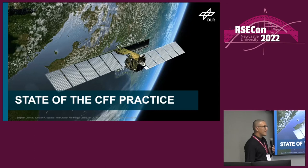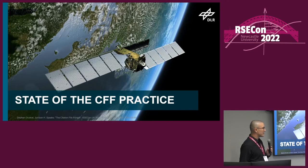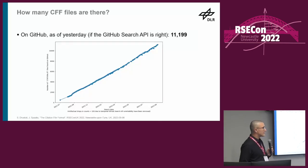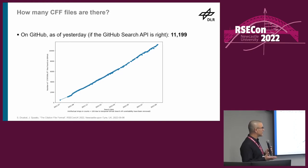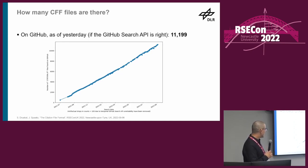I was really interested to see, now that we have quite a number of files on GitHub, how people actually use them. I ran a query every single day against the GitHub search API, and as of yesterday there are around 11,000 files on GitHub. That's a suspiciously linear growth, so there might be something wrong - the original graph looks like a Mohawk haircut because of issues with backend work on GitHub causing unreliable search results. So this is an approximation.